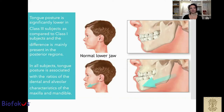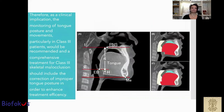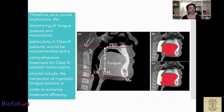In all subjects, tongue posture is associated with the ratio of the dental and alveolar characteristics of the maxilla and mandible. Therefore, as a clinical implication, the monitoring of tongue posture and movements, particularly in class 3 patients, would be recommended. A comprehensive treatment for class 3 skeletal malocclusion should include correction of improper tongue posture in order to enhance treatment efficiency.